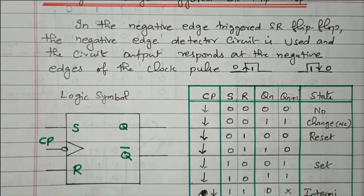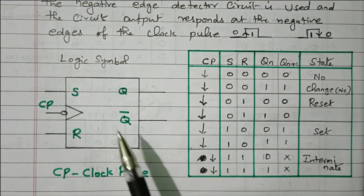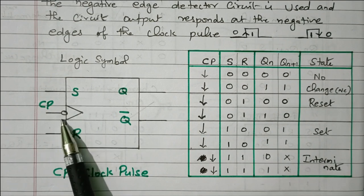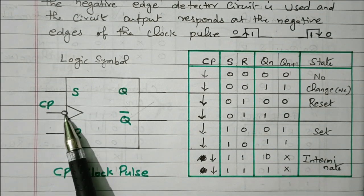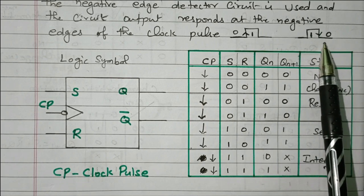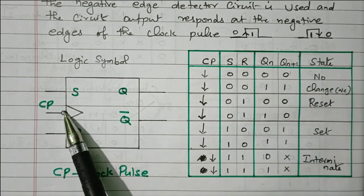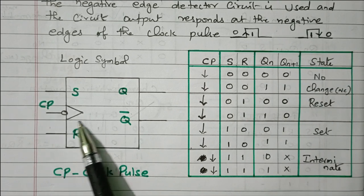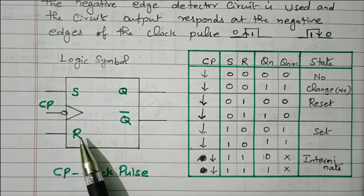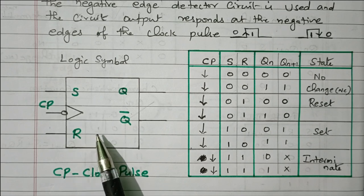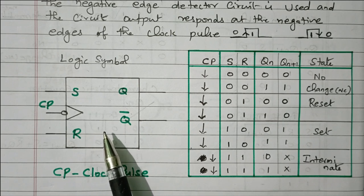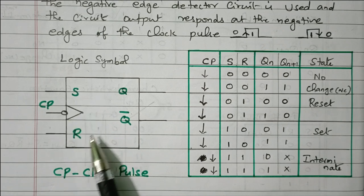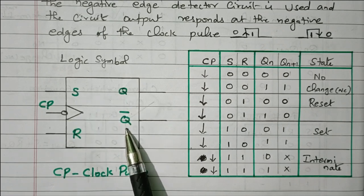Now we will see the logic symbol and the truth table. This is the SR flip-flop. The clock pulse is given through an inverter because we are responding to the negative edge — when 0 is applied, it becomes 1 and the circuit responds. The inputs are S (set) and R (reset), and the outputs are Q and Q-bar (complement of the output).